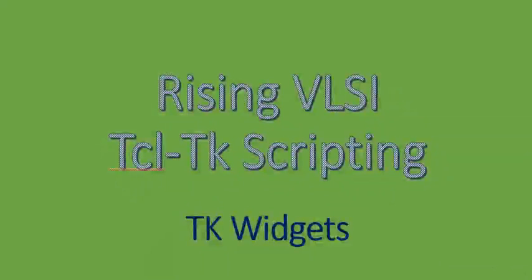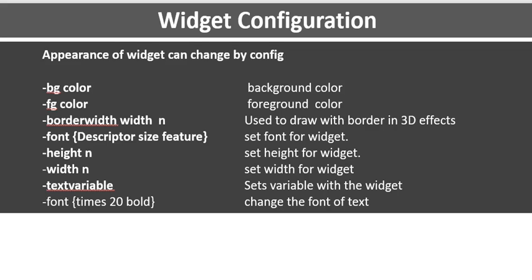Welcome again to the Driving Wheel SI channel. In this video I am going to discuss the TK widget and how the TK widget can be configured. In the last video I discussed how to make widgets appear on the screen with the help of a geometry manager. Now, after making them appear, how can we configure the widget? The configuration can change the appearance of a widget, and for that I am going to use the dot config command.